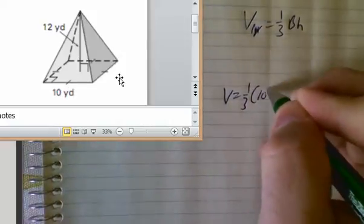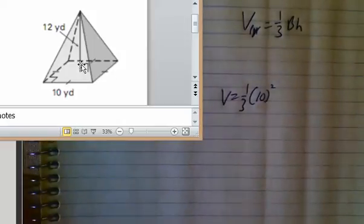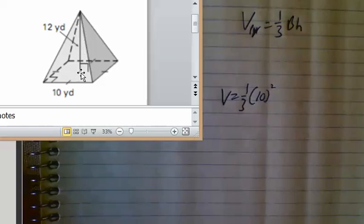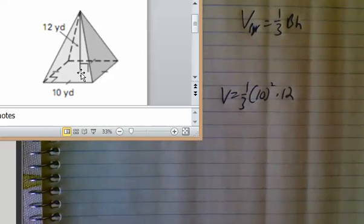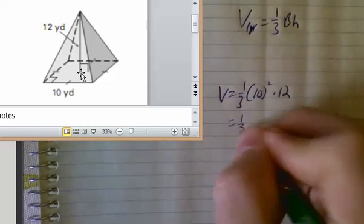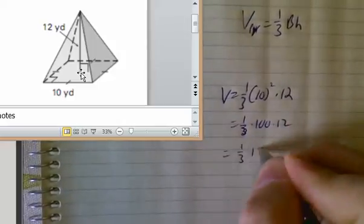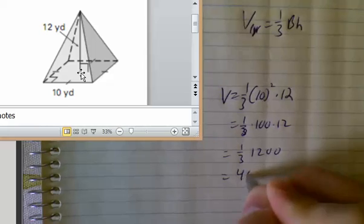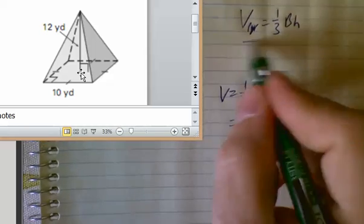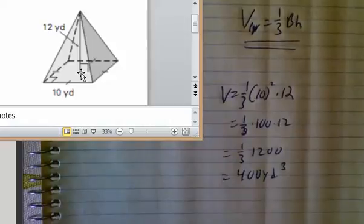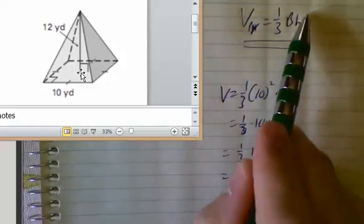The base here looks like it's a square with side length 10, so the area of that square is going to be 10 squared, that's 10 times 10, times the height of the pyramid. The height of the pyramid looks like it's 12, times 12. This is going to be one third times 100 times 12, so that's one third times 1200, which is 400 cubic yards. The volume of a pyramid is exactly one third the volume of the prism that has the same base and the same height.